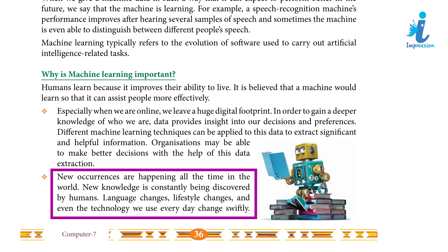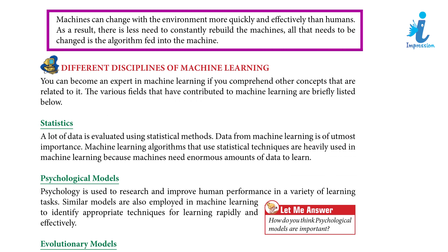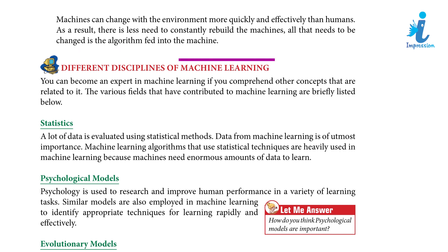New occurrences are happening all the time in the world, and new knowledge is constantly being discovered by humans. Language changes, lifestyle changes, and even the technology we use every day change swiftly. Machines can change with the environment more quickly and effectively than humans; as a result, there is less need to constantly rebuild the machines. All that needs to be changed is the algorithm fit into the machine.